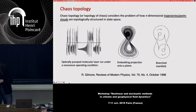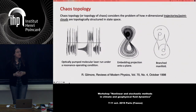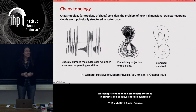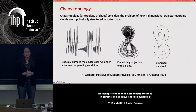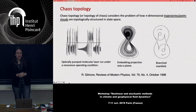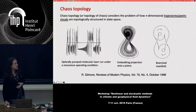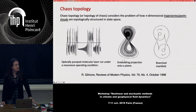What I am going to talk about is chaos topology — also called topology of chaos — which concerns the problem of how n-dimensional trajectories or point clouds are topologically structured not in physical space but in state space. The example you are seeing comes from Robert Gilmore's Review of Modern Physics, a 1998 article explaining the basis of the method. There you see a time series from an optically pumped molecular laser under resonance operating conditions, an embedding projection onto a plane, and a branched manifold I will be talking about shortly.